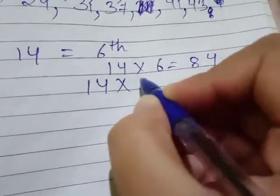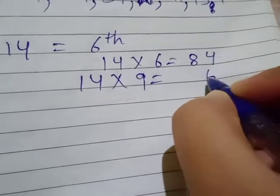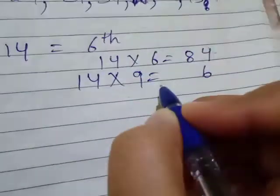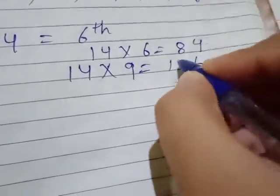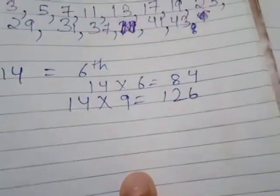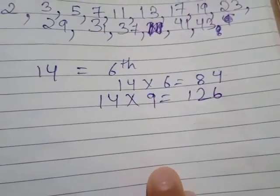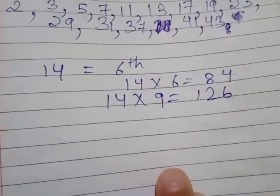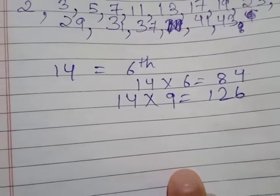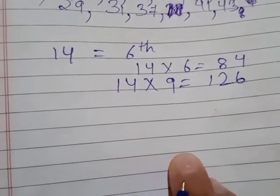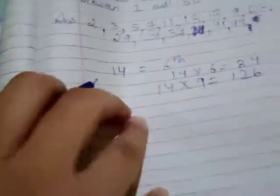Similarly, 14 multiply 9. 9 fours are 36, 3 carry, 9 ones are 9, 10, 11, 12. 84 and 126 will be your sixth and ninth multiple of 14. Clear?